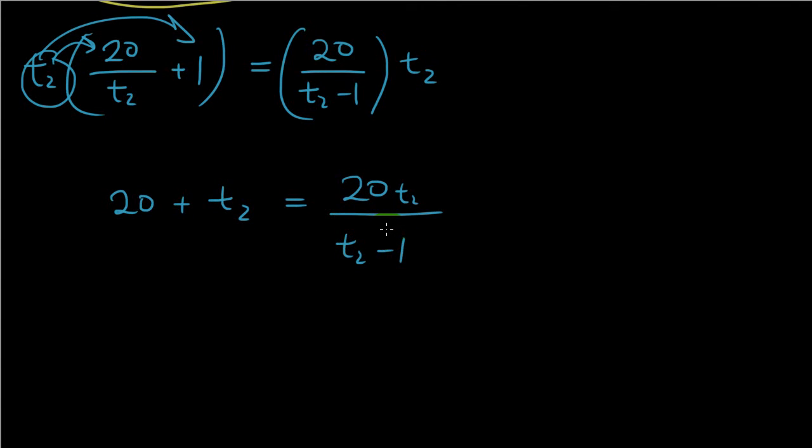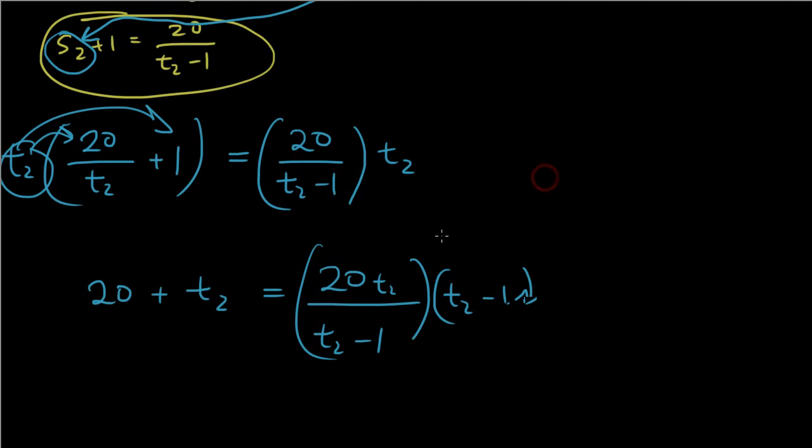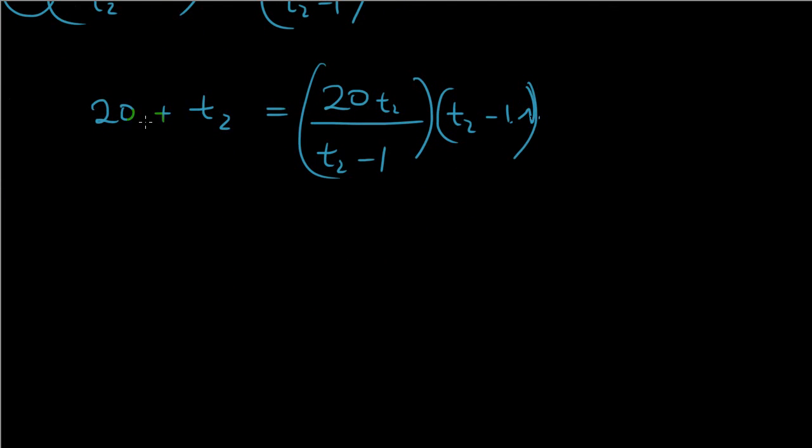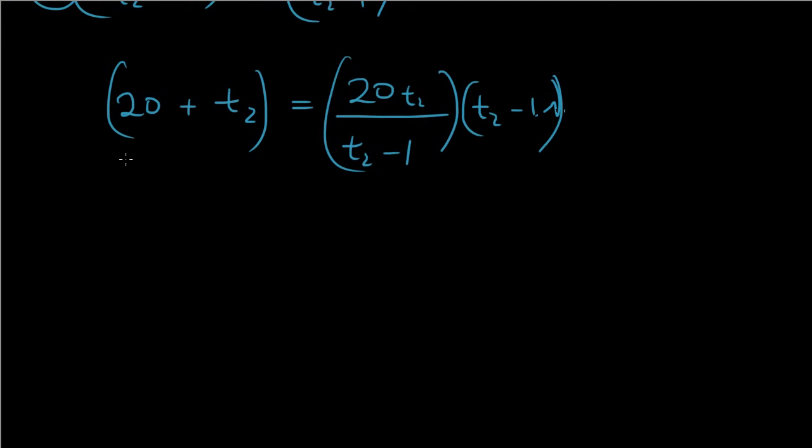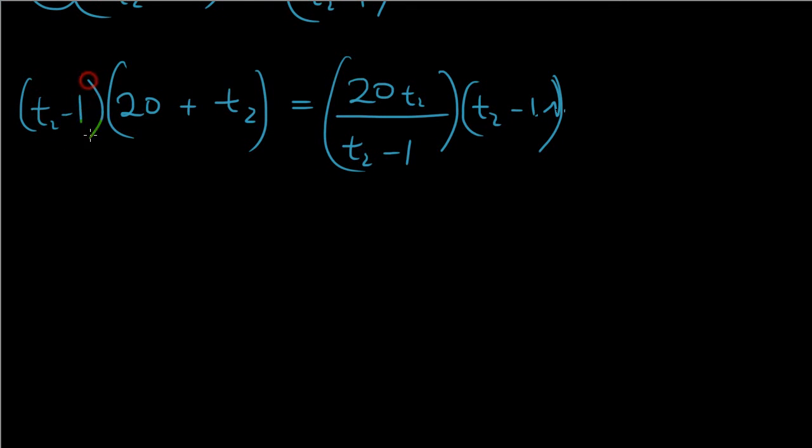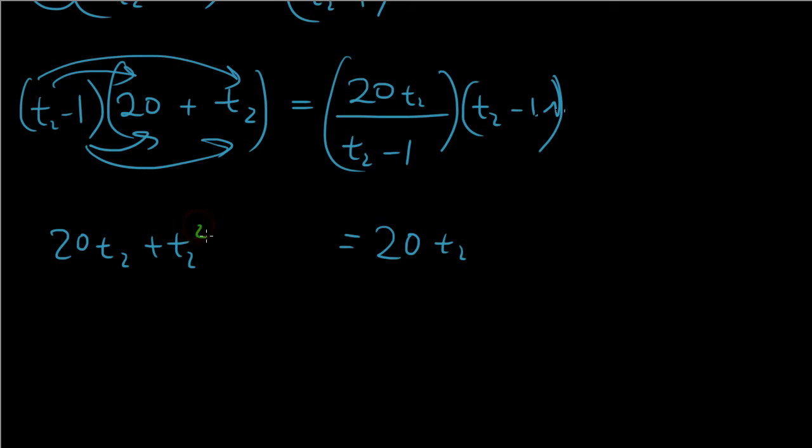Now, if I multiply both sides by T2 minus one, then I will get 20 T2 equals, and if I expand this out, 20 T2 plus T2 squared minus 20 T2 equals 20 T2.